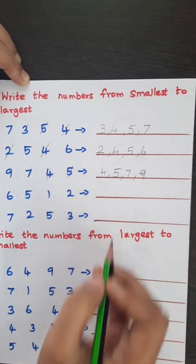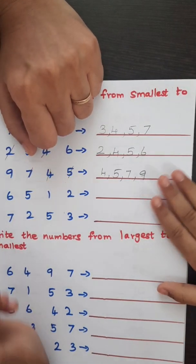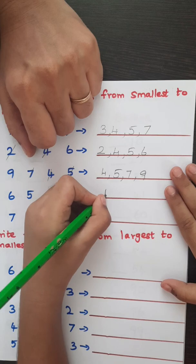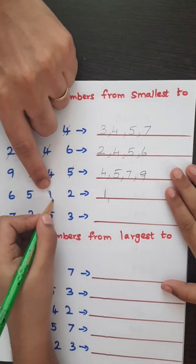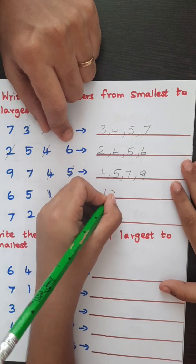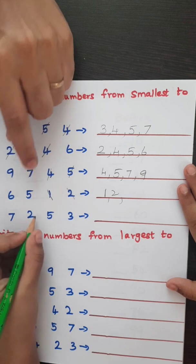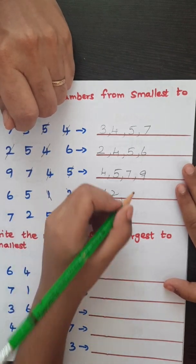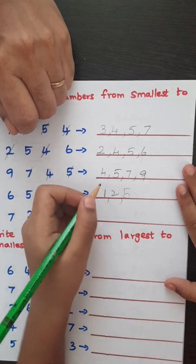Can I do these two? Yeah, okay. So which is the smallest number here? One. Okay. Cut the one, two. Now two. Okay, cut the two. So which is the smallest number here? Five. Okay. So six, yes.